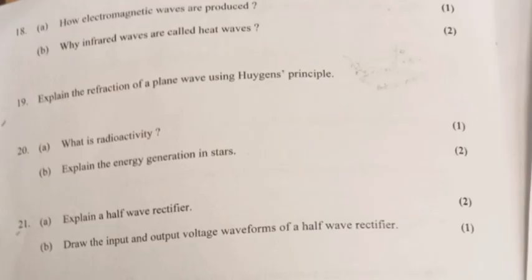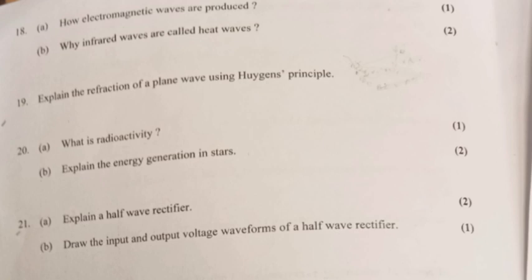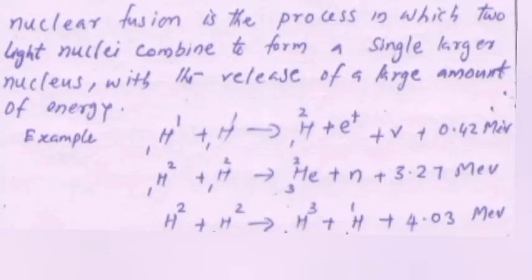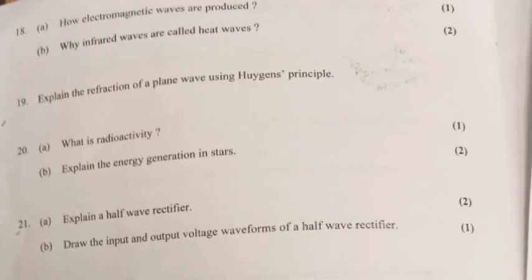Question 20A: What is radioactivity? Answer: It is a nuclear phenomenon in which an unstable nucleus undergoes a decay. Part B: Explain the energy generation in stars. Answer: Nuclear fusion is the process in which two light nuclei combine to form a single larger nucleus with the release of large amount of energy.